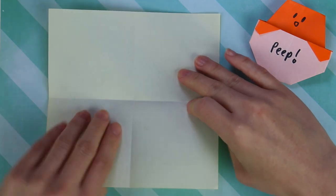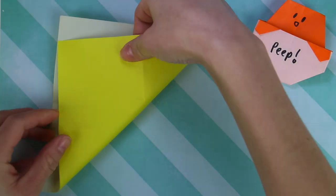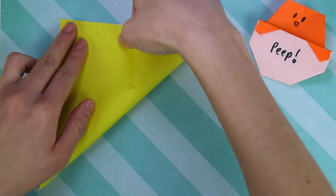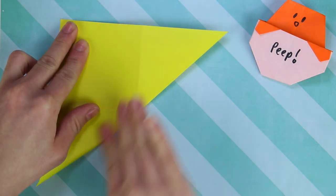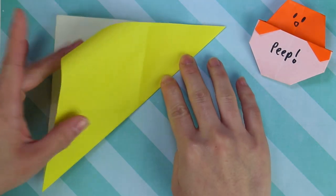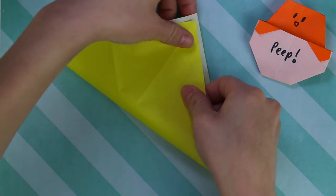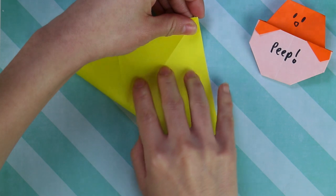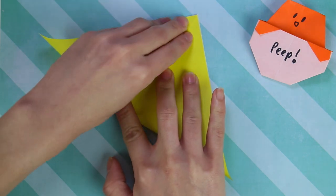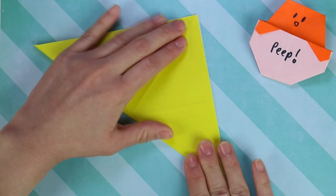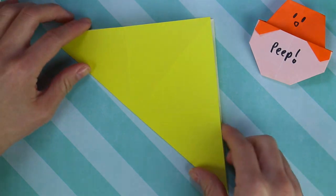And now let's fold the entire thing diagonally to create a triangle. Unfold. And do the same thing on the other side. And unfold.